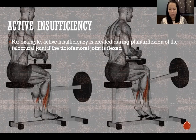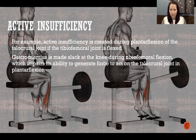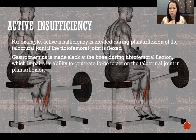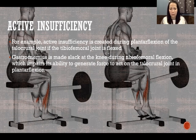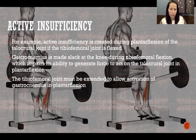Another example is when we plantar flex with the knee flexed. Because gastrocnemius crosses both the knee and the talocrural joint, if we flex the knee we're creating slack in that muscle, so that when gastrocnemius contracts and shortens, it can't shorten to a great enough degree to actually transfer that tension to the calcaneus to lift the heel up. So when the knee is flexed, we create slack in the gastrocnemius muscle, which means that soleus would be the prime mover — the agonist — in plantar flexion, due to the active insufficiency of gastrocnemius.